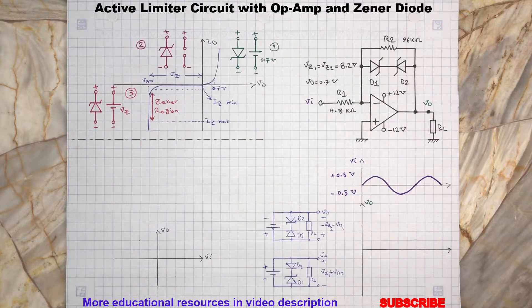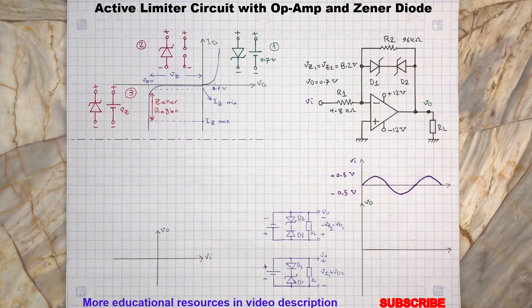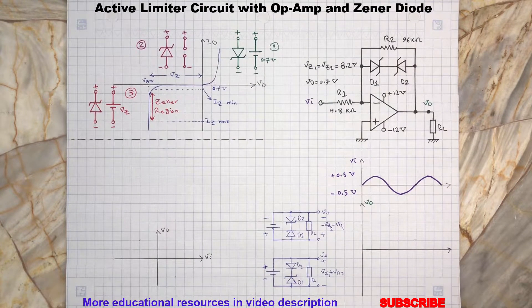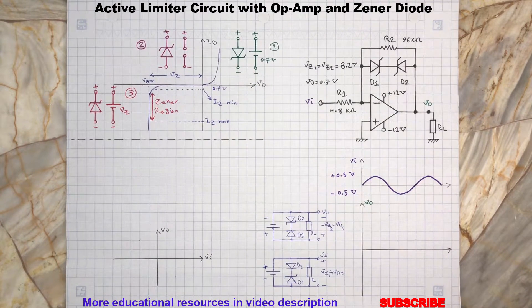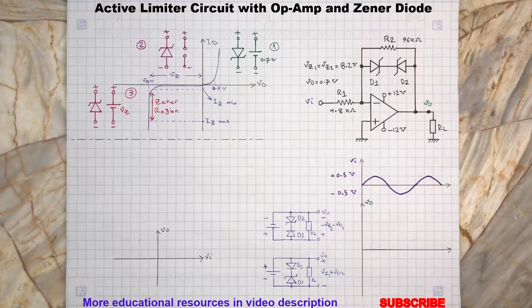Here we can see the Zener diode IV curve. Basically, a Zener diode has three operational regions. We can start with forward bias region number one here in this graph.